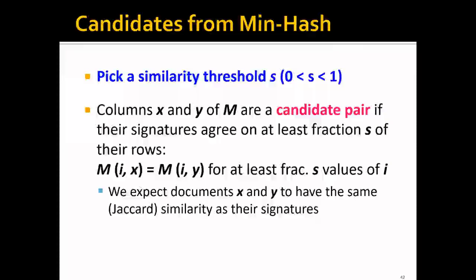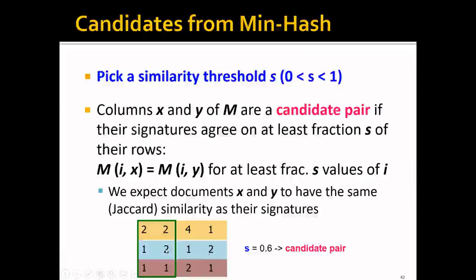Concretely, we will first take a similarity threshold s, where s is larger than zero and smaller than one. Columns x and y — basically documents x and y — are a candidate pair if their signatures agree on at least a fraction s of their rows. That means their similarity will be above 0.6, and they are a candidate pair.